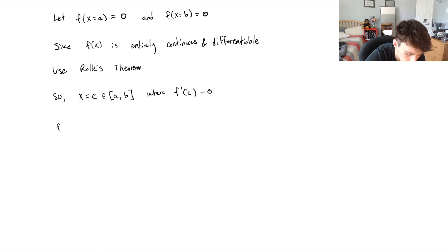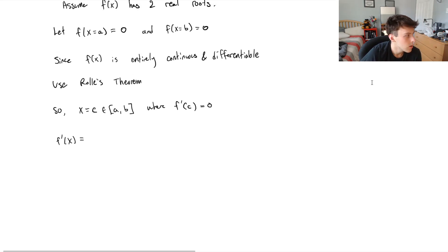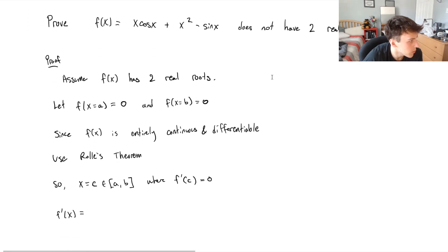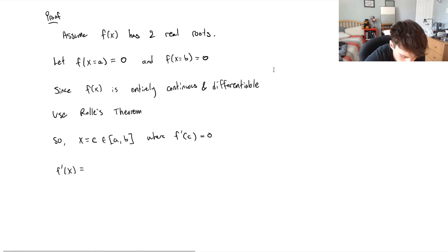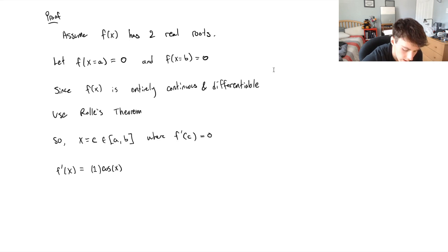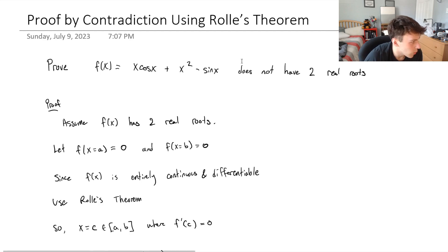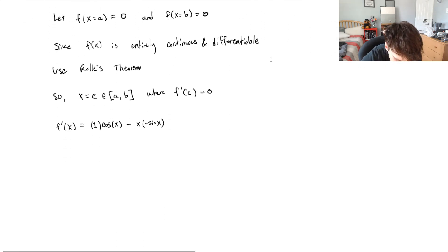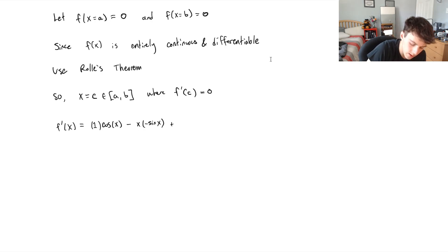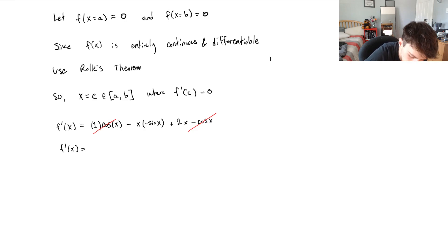So let's take the derivative, f'(x). We've got the first term x times cosine of x, so we've got to use the product rule. We get 1 times cosine of x, and then minus the first term times the derivative of the second term, which would be negative sine of x. And then we've got plus x² minus sine x, so that would be plus 2x, and then minus sine of x would just be minus cosine of x. We can see that the cosine of x terms cancel out, and we've got f'(x) = x·sin(x) + 2x.